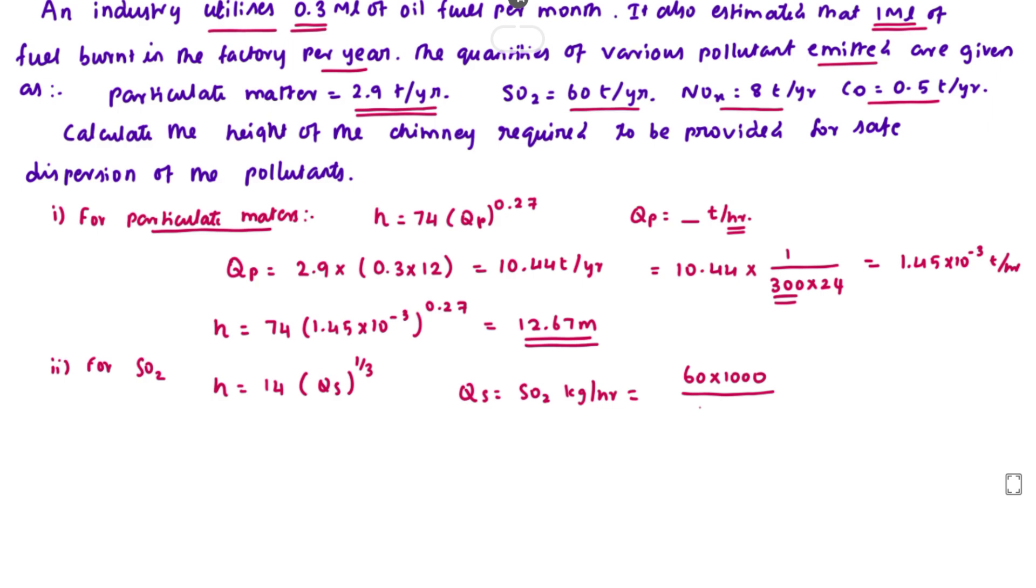We convert into hours per year. Assuming again 300 working days in the year of 24 hours of working, so 300 into 24, into 12, into 0.3. 12 months and 0.3 million liters of oil fuel burn per month. Solving this we get the value of 30 kg per hour.